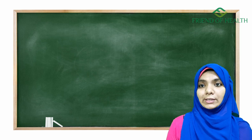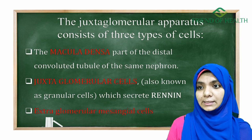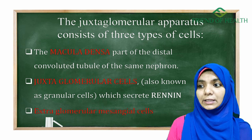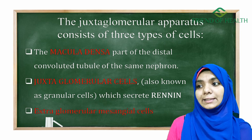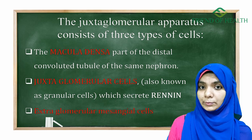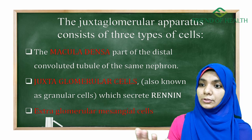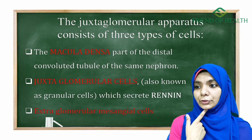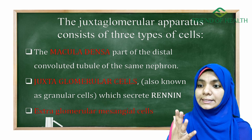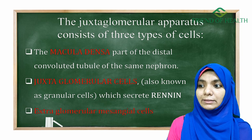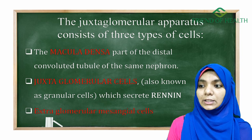The juxtaglomerular apparatus consists of three types of cells. The first is macula densa — this is a part of the distal convoluted tubule of the same nephron. They may ask: macula densa is a part of which structure? The answer is the distal convoluted tubule of the same nephron.